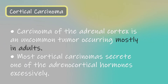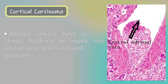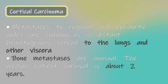Cortical carcinoma. Carcinoma of the adrenal cortex is an uncommon tumor occurring mostly in adults. Most cortical carcinomas secrete one of the adrenocortical hormones excessively. Adrenal cancers have a strong tendency to invade the adrenal vein, vena cava, and lymphatics. Metastases to regional and paraaortic nodes are common, as is distant hematogenous spread to the lungs and other viscera. Bone metastases are unusual. The median patient survival is about 2 years.